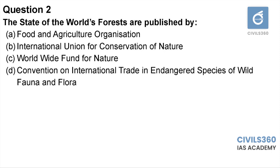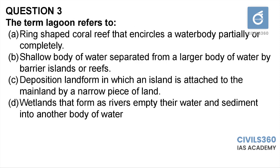Question number three: the term lagoon refers to — A: a ring-shaped coral reef that encircles a water body partially or completely. B: a shallow body of water separated from a larger body of water by barrier islands or reefs. C: a depositional landform in which an island is attached to the mainland by a narrow piece of land. D: a wetland that forms as rivers empty their water and sediment into another body of water.